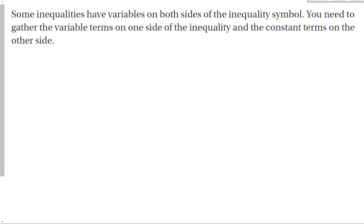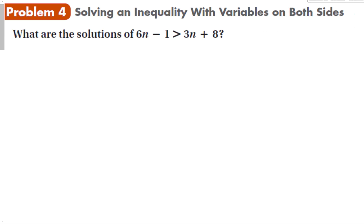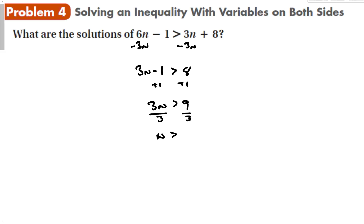Some inequalities have variables on both sides of the inequality symbol. You need to gather the variable terms on one side and the constant terms on the other side in order to solve. With inequalities, it's easier to bring the smaller coefficient to the larger coefficient to avoid negative coefficients. Solving by gathering the n's on the left gives 3n minus 1 is greater than 8. Adding 1 gives 3n > 9, and dividing by 3 gives n > 3.